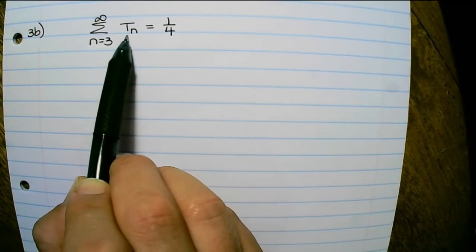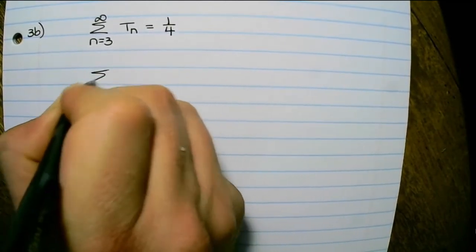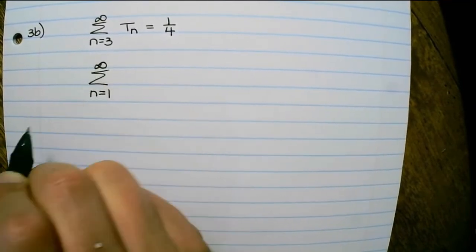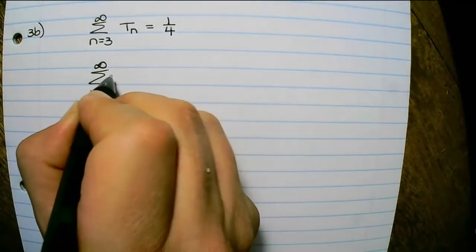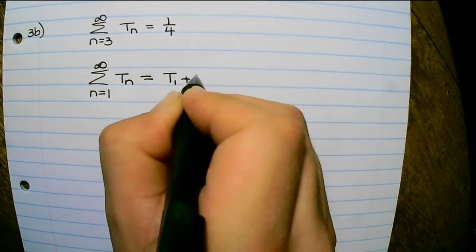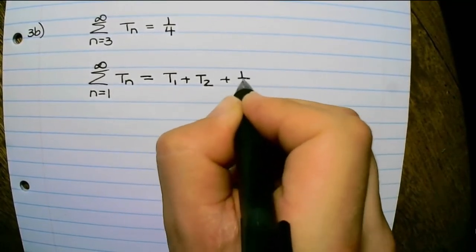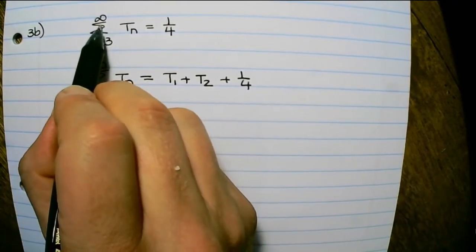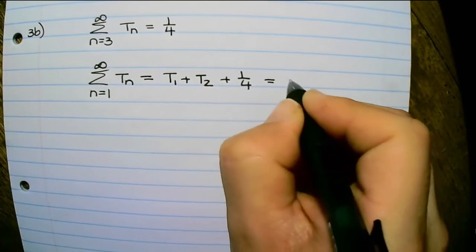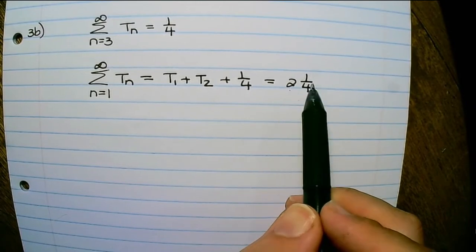But we need the first two terms as well, because I want to start at the first term up until infinity. I know that T1 + T2 equals 2, plus a quarter from term three to infinity for the rest of the terms. So the sum to infinity for this pattern is two and a quarter.